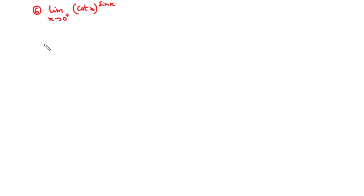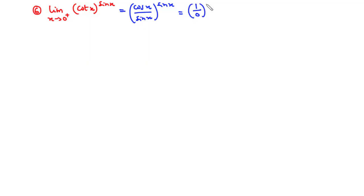Let's find the limit as x approaches 0 from the right of cos x to the power sin x. Direct substitution: cos x to the power sin x becomes (cos 0 / sin 0)^(sin 0). Cos 0 is 1, sin 0 is 0, so we have 1 over 0 which is infinity, raised to the power 0 — this is an indeterminate power.